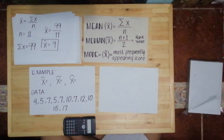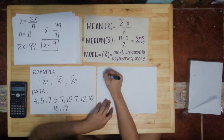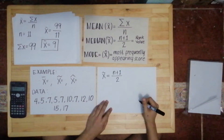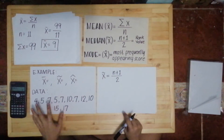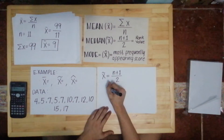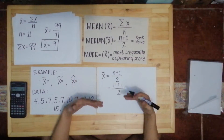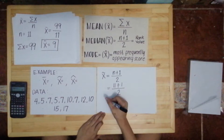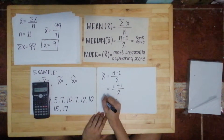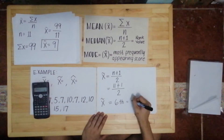For the median, we need the rank value again using x-tilde equals n plus 1 over 2. The n is the number of scores — you just count them, you don't add them. We have 11 scores, so n equals 11. Median equals 11 plus 1 over 2, which equals 12 over 2, equals 6. Again, this is not yet the final answer — it is just the rank value, meaning the 6th position.